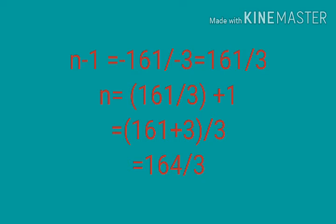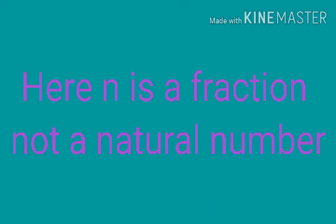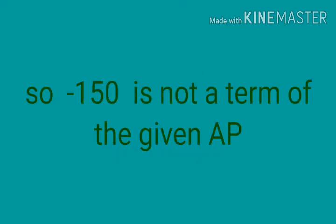164 by 3 — doing the division, we can make it a mixed fraction. 164 by 3 gives quotient 53 and remainder 4, so the mixed fraction is 53 and 4 by 3. Here N is in fraction form, it is not a whole number. So we can conclude: negative 150 is not a term of the AP.